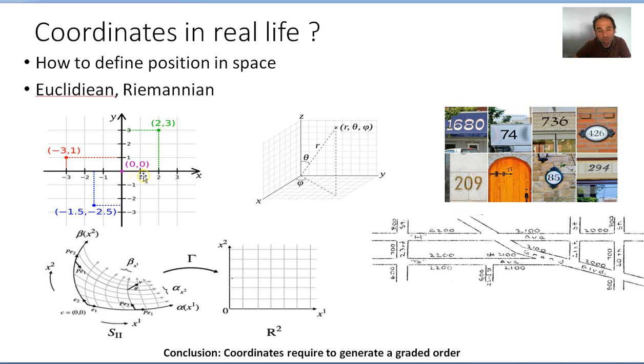Because you assume that there is a graded, pre-graded expression along each axis, starting with 1, 2, 3, and so on. And so we assume this, and this allows us, indeed, to define points.